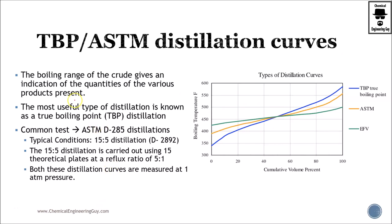TBP, which stands for True Boiling Point distillation curves, are very important because they are the footprint of what is going to happen when we boil our crude oil. This is important because it gives us temperatures and percentages — the ratios and cuts that we will eventually have in our distillation column.